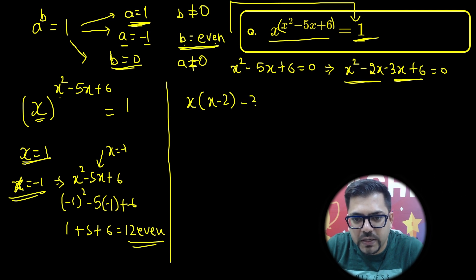And from the second, third, and fourth term, take minus 3 as common and you'll get x minus 2 equals 0. So you have got x minus 2 and x minus 2, which gives you x minus 2 in bracket times x minus 3.